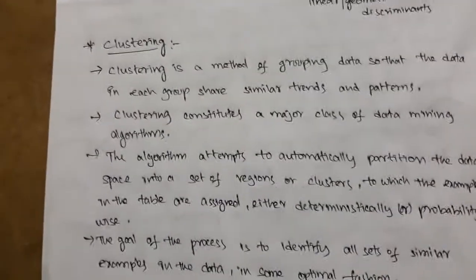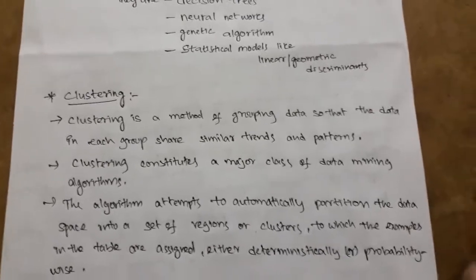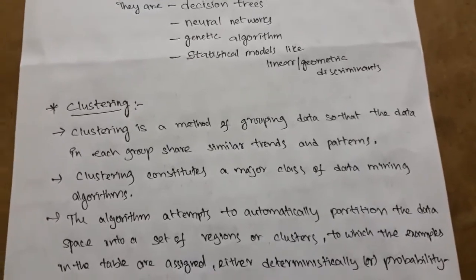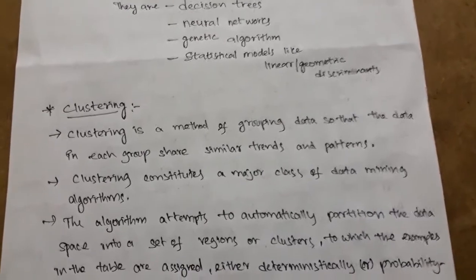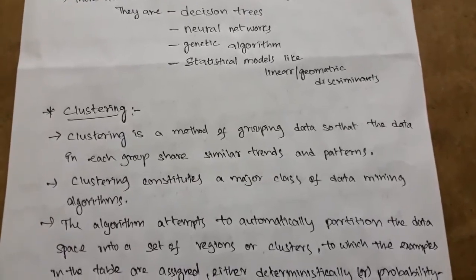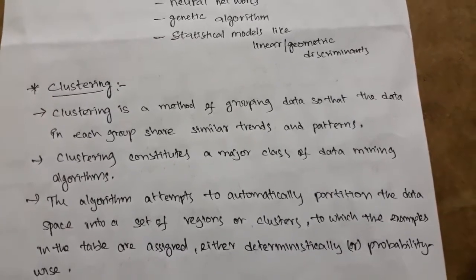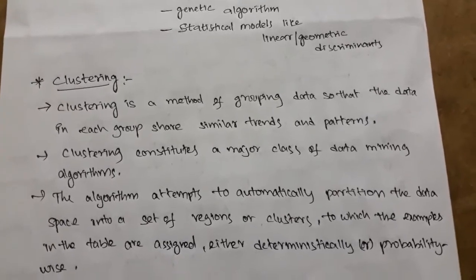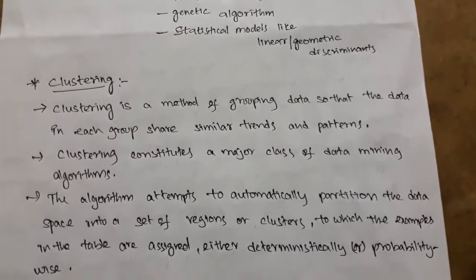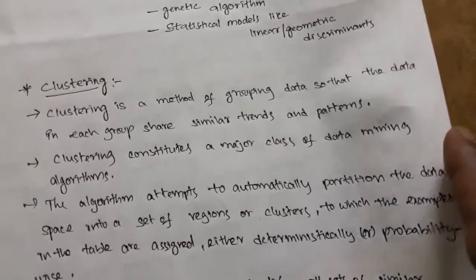Clustering: the total data is divided into different subgroups. A set of items you should separate into subsets. Clustering is the method of grouping data so that the data in each group shares similar trends and patterns. Clustering constitutes a major class of data mining algorithms. The algorithm attempts to automatically partition the data space into a set of regions or clusters to which examples in the table are assigned either deterministically or probability-wise. There is no specific rule for clustering — based on probability and similarities, you should consider the data into different subgroups.